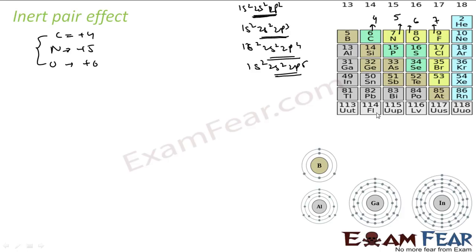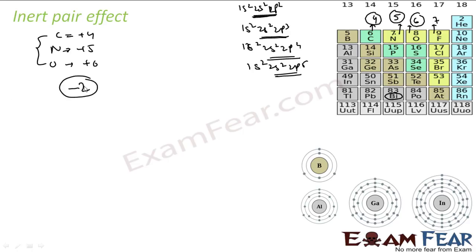However, if you go down the group, the maximum oxidation state is not shown. For example, Bismuth (Bi) will not show a +5 oxidation state, and Tin (Sn) may not show +4. As you go down the group, the observed oxidation state is 2 units less than the group oxidation state. For the Carbon group the group oxidation state is 4; for the Nitrogen group it is 5; for the Oxygen group it is 6. Elements lower in the group show 2 less than this maximum.